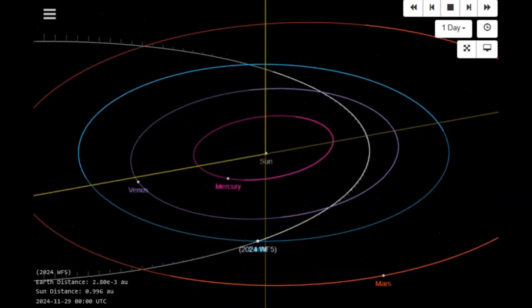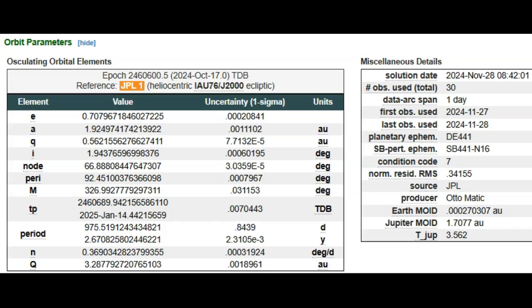Looking at some of the orbit parameters, this rock was first spotted yesterday on November 27th and the solution date, as you can see up here, is the 28th, today. So I'm keeping you updated as usual. Total observations: 30 observations over a one day period.